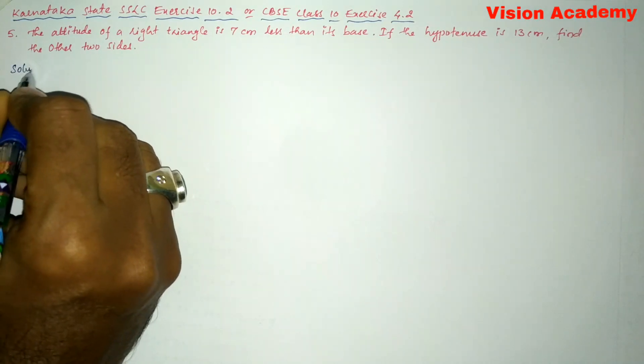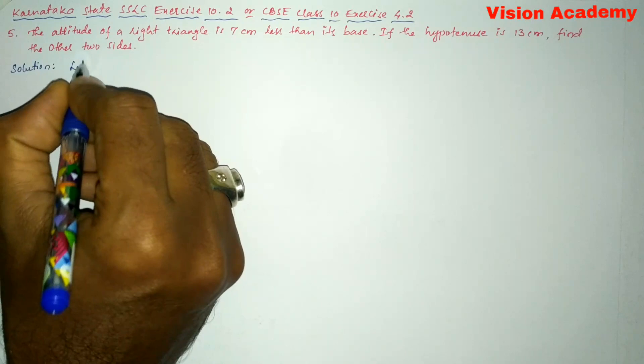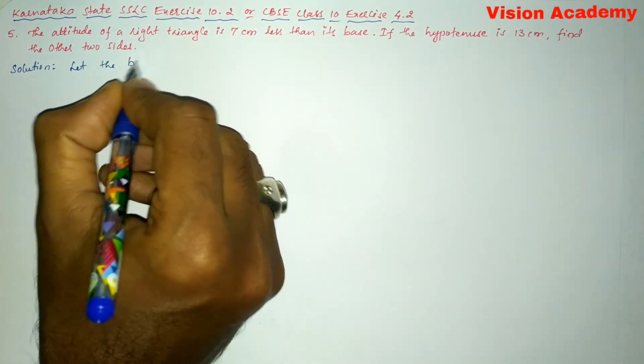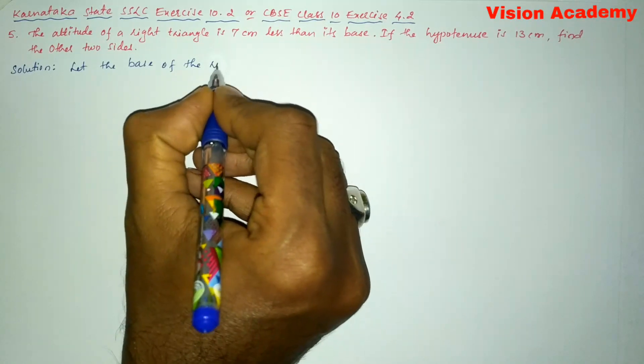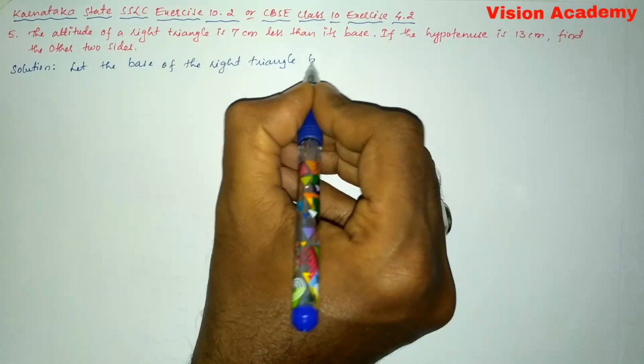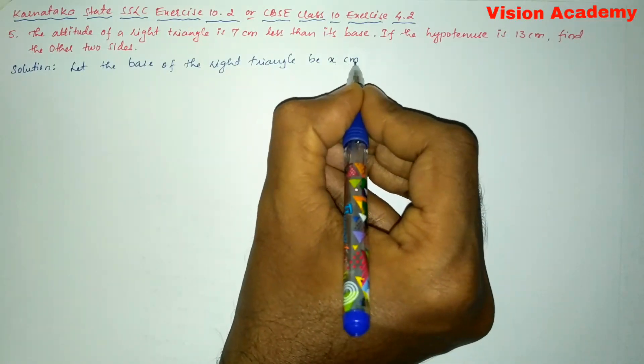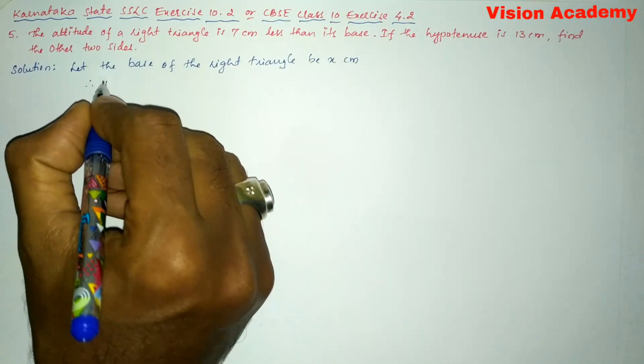Let us find the solution for the given problem. Let the base of the right triangle be x cm. Therefore, we can write the altitude